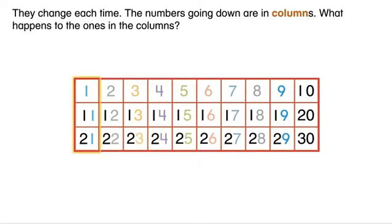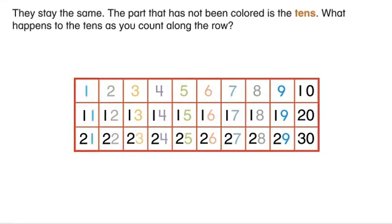The numbers going down are in columns. What happens to the ones in the columns? They stay the same. The part that has not been colored is the tens.